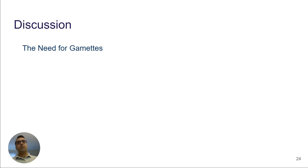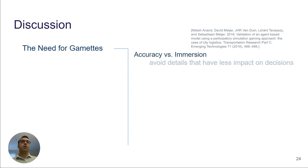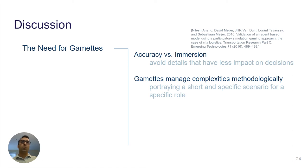Now, the question is why do we need gamettes because there are many simulation games out there that use agent-based participatory framework to put the human in the loop of the simulation. Previous studies showed that when human participants have access to all aspects of the simulation, this can make the process unnecessarily complicated. And this shows a trade-off between accuracy of the simulation and player immersion, and suggests to avoid details that have less impact on the decisions. Although we can fine-tune this trade-off between accuracy and player immersion through iteration, gamettes actually manage these complexities methodologically by portraying only a short and specific scenario for a specific role. In this way, we can make accurate models and immerse players into specific scenarios without overwhelming them with excessive information about all aspects of the simulation.